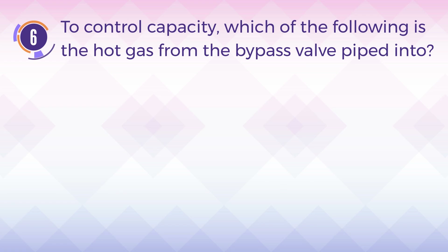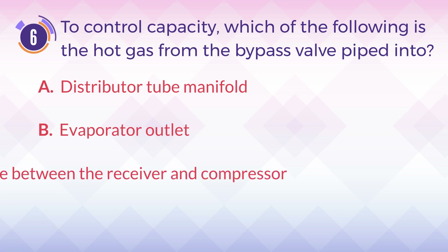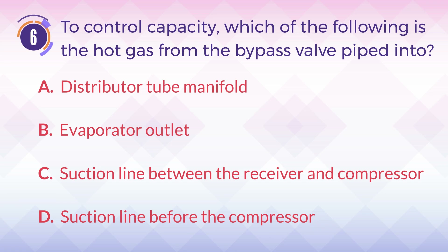Number 6. To control capacity, which of the following is the hot gas from the bypass valve piped into? A. Distributor tube manifold. B. Evaporator outlet. C. Suction line between the receiver and compressor. D. Suction line before the compressor.